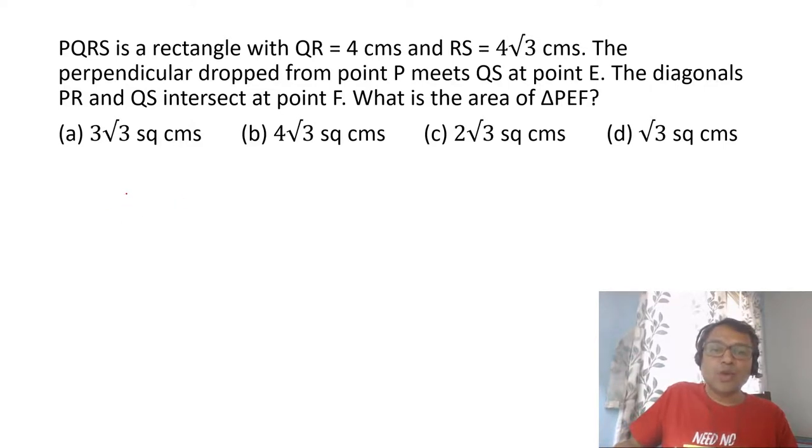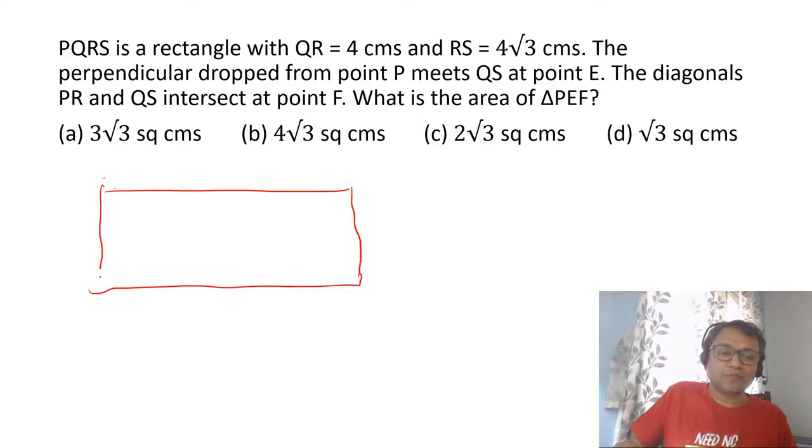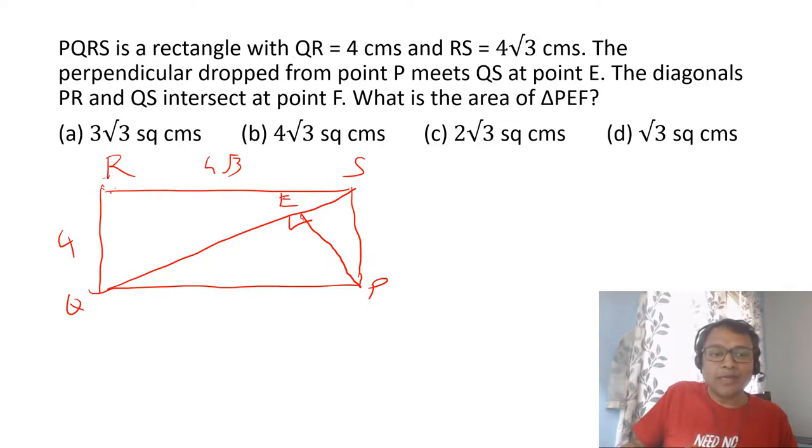Rectangle PQRS with QR and RS. If you look at RS, it's bigger than QR, so let's say RS is 4 root 3. QR is 4. P will come here. Then a perpendicular is dropped from P to meet QS.